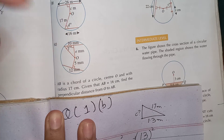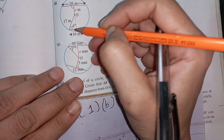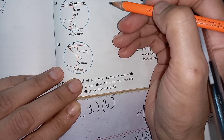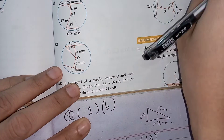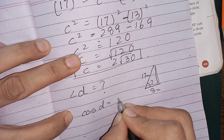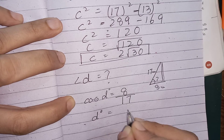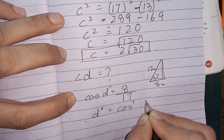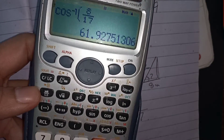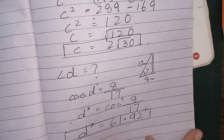Now finding angle D. Drawing the perpendicular divides the chord of 16 metres into two equal parts of 8 metres each. Using the cosine ratio: cos D equals 8 over 17, so D equals cos⁻¹(8/17). Question number 1 part B is now solved.